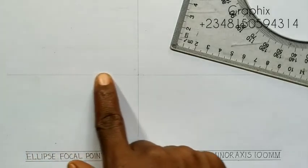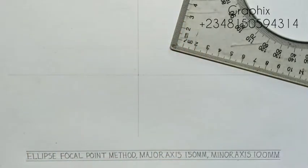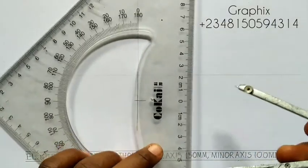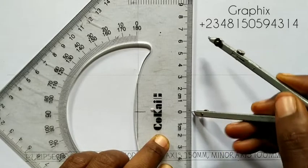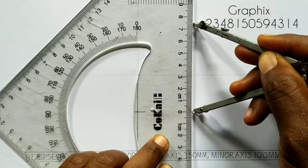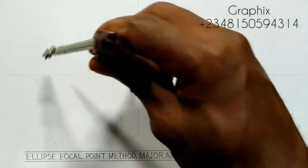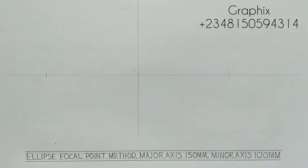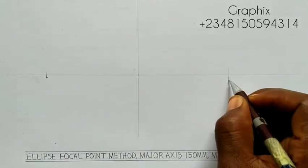The major axis is the one that is horizontal, and the minor axis is the one that is vertical. Draw your horizontal and vertical lines meeting at the center. Now take half of 150, which is 75. Measure 75 from your metal rule and place it at the center, marking left and right. These points will be point A and point B.